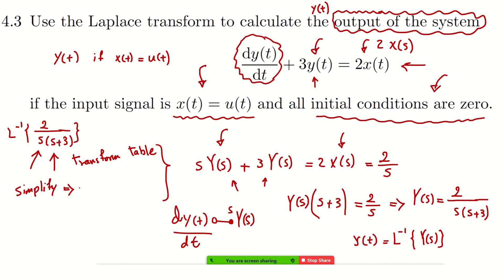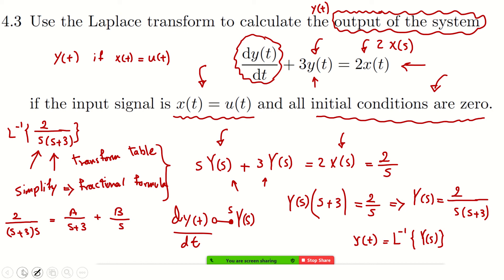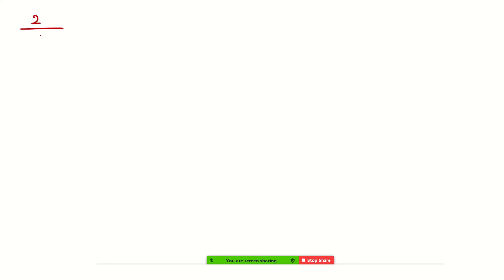That means we should use partial fraction expansion. We write 2 / (s(s+3)) in the form: a/(s+3) plus b/s. So I decompose this into two parts: a/(s+3) + b/s.